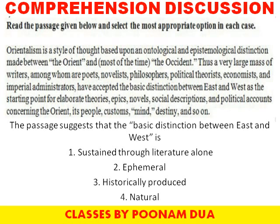Option three — historically produced. This is historically produced, but there are also many other things and many other people's viewpoints included. Option four — natural. Natural seems to be more fitting than the other options. Orientalism exists in almost every field: be it poet, novelist, philosopher, political theorist, economist, administrator, or any other field. That means Orientalism is a natural thing. So the answer is natural.